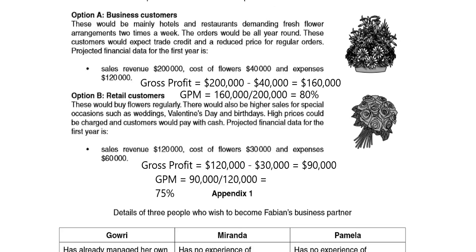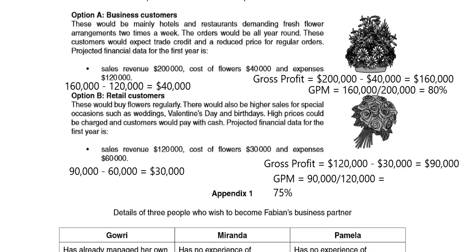We can't just base it on gross profit — we also need to look at the relationship with expenses and calculate the profit. For option A, the gross profit of $160,000 minus expenses of $120,000 gives a profit of $40,000. For option B, the gross profit of $90,000 minus expenses of $60,000 gives a profit of $30,000, which is only $10,000 lower than option A. The expenses for option A are significantly higher and would bring about worry that we need to consider within our analysis.